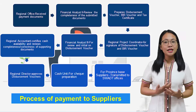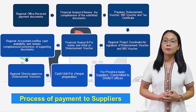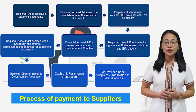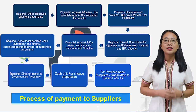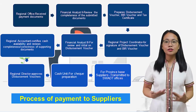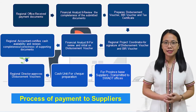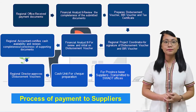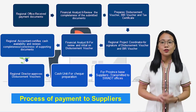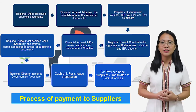If the attachments are already complete, the disbursement vouchers, BIR voucher, and tax certificate must be prepared. These vouchers will then be forwarded to the regional program coordinator for signature. Once signed, these documents must be sent back to the Finance Unit for final review and initial of the Financial Analyst 3. Once reviewed, these documents will be forwarded to the regional accountant for review and certification of cash availability.